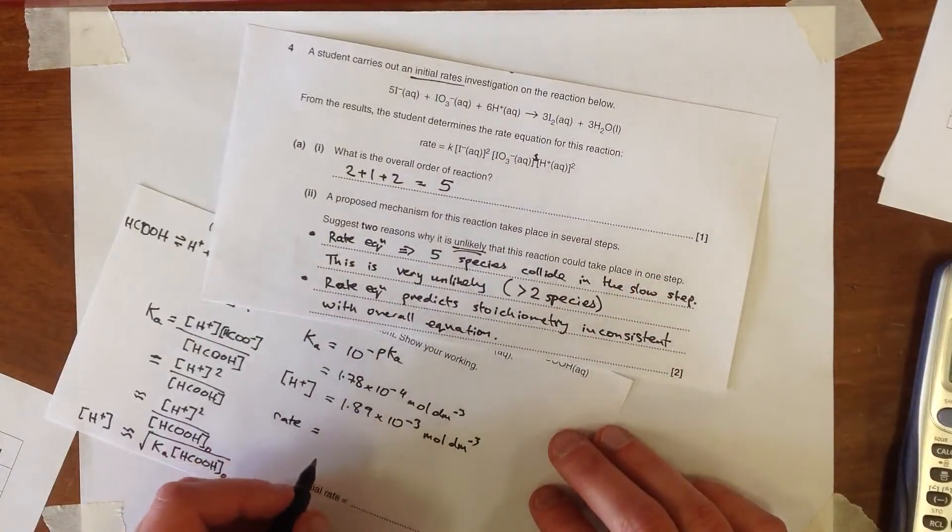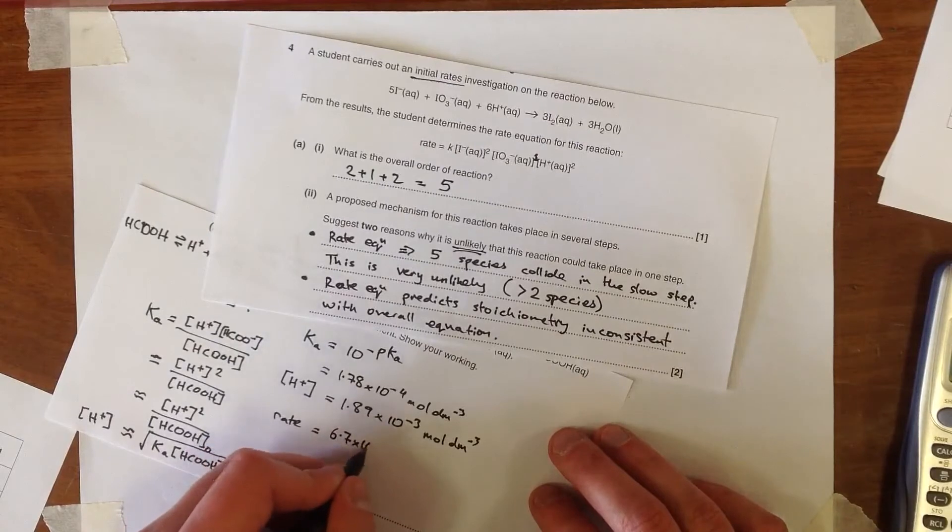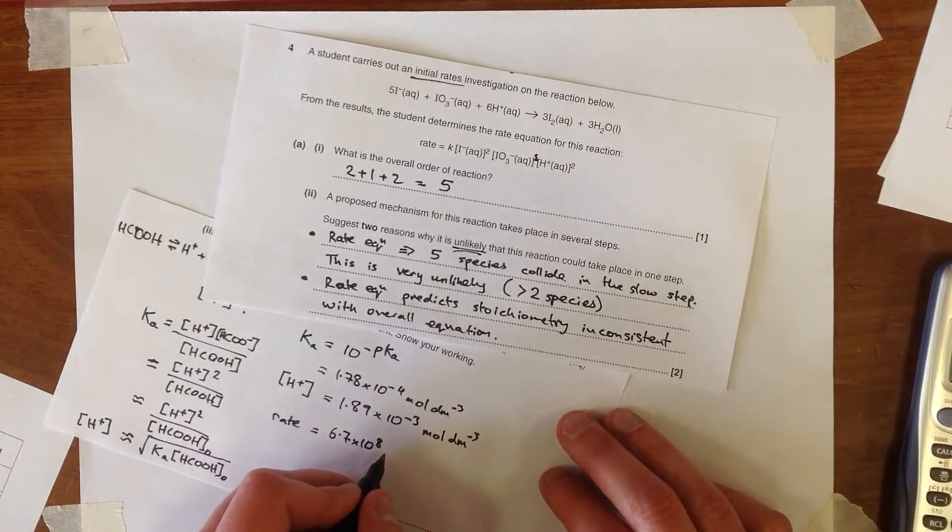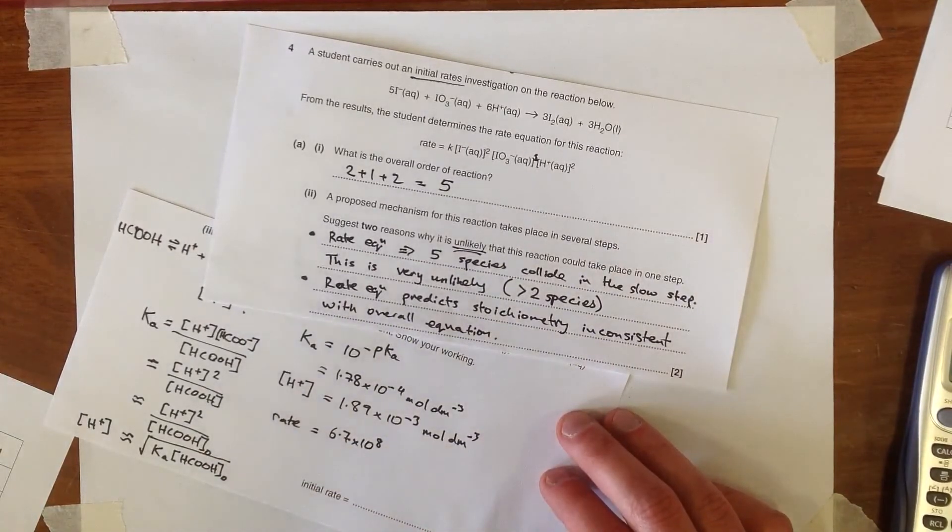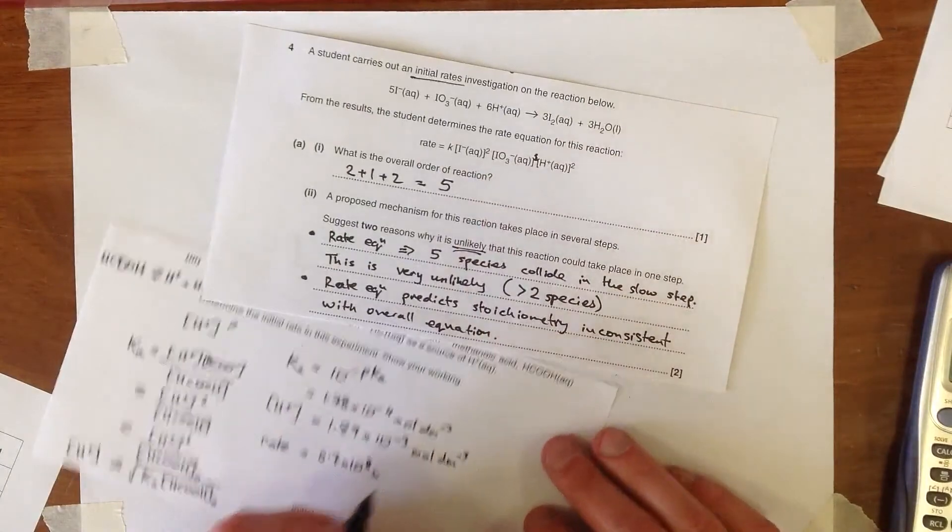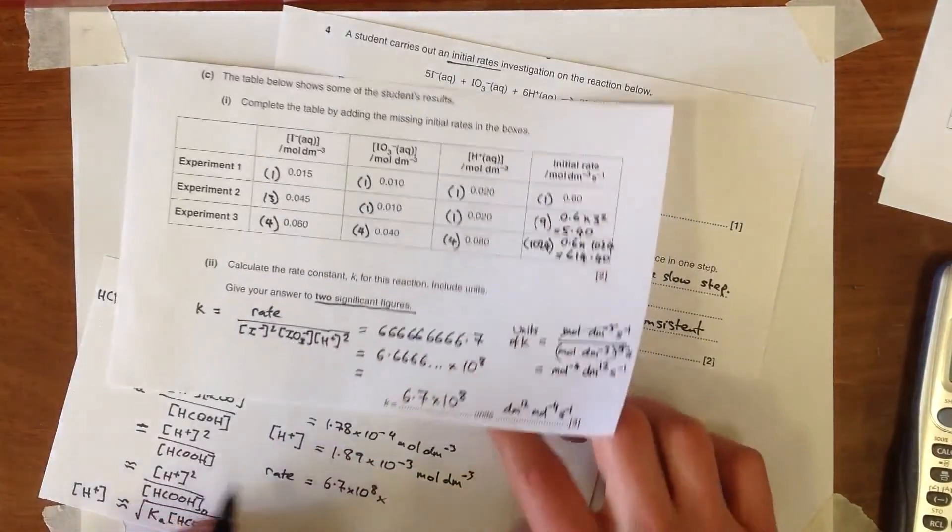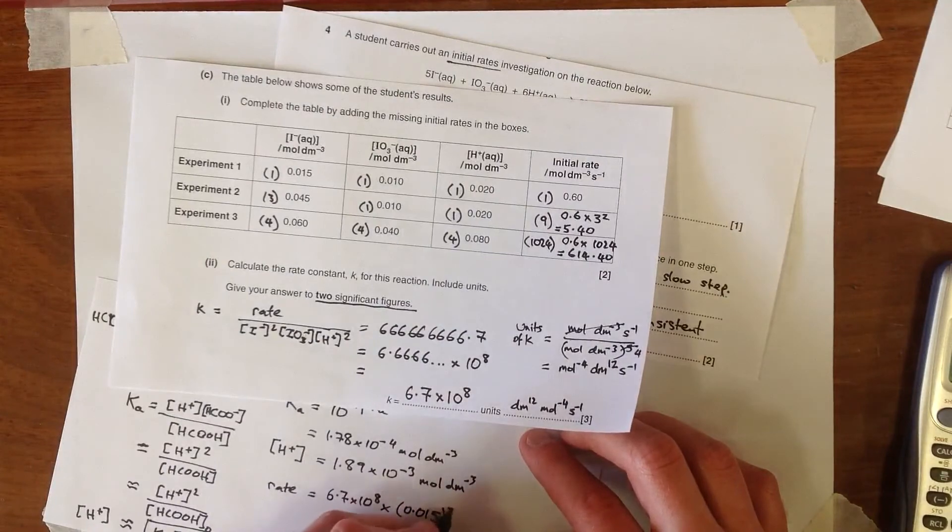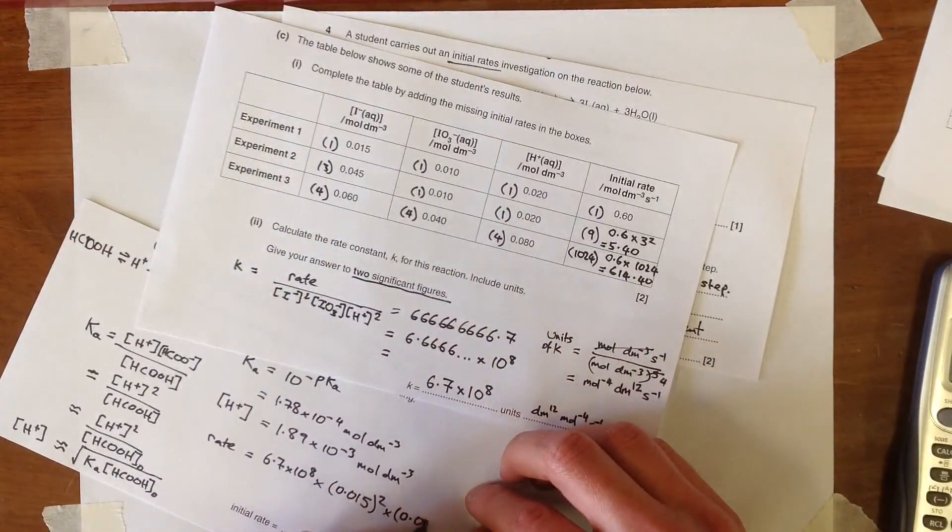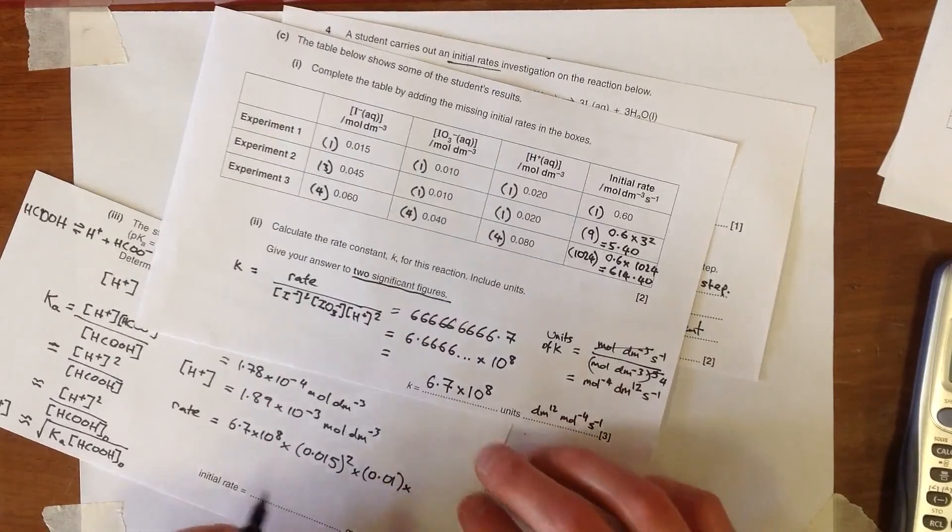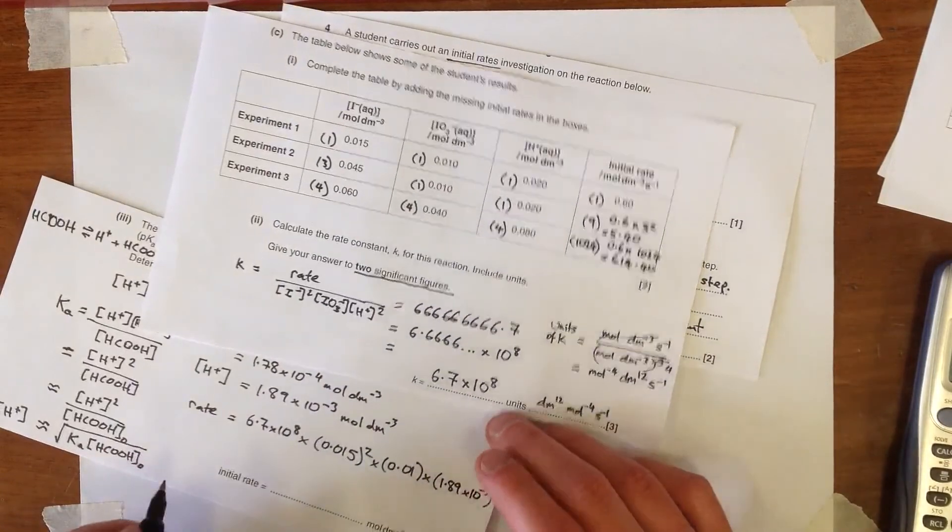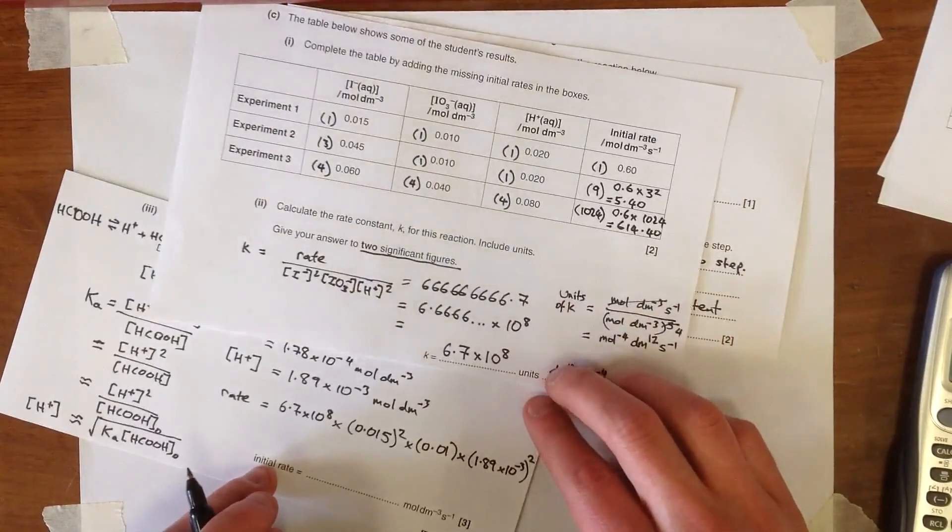Again, we get our K value, which we got from our previous set, that's 6.7 times 10 to the 8. We can use an unrounded or a rounded value here. It doesn't actually matter as far as the mark scheme is concerned, though it's better to go back to get that original number when you get to this stage in the calculation. And then we need to multiply that by I minus squared. It's the same as experiment 1, so that would be 0.015 squared. We need to have iodate to the power 1. We've got 0.01 moles of iodate. And we've got this time 1.89 times 10 to the minus 3 moles per decimetre cubed of H plus.